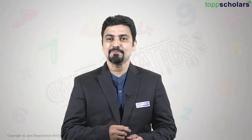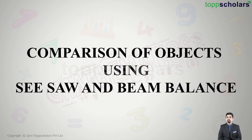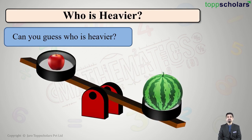Hello students, welcome to Top Scholars. Today let us study about comparison of objects using seesaw and beam balance. Let us begin — we have to guess who is heavier. These are the two given objects: in one pan we have an apple.